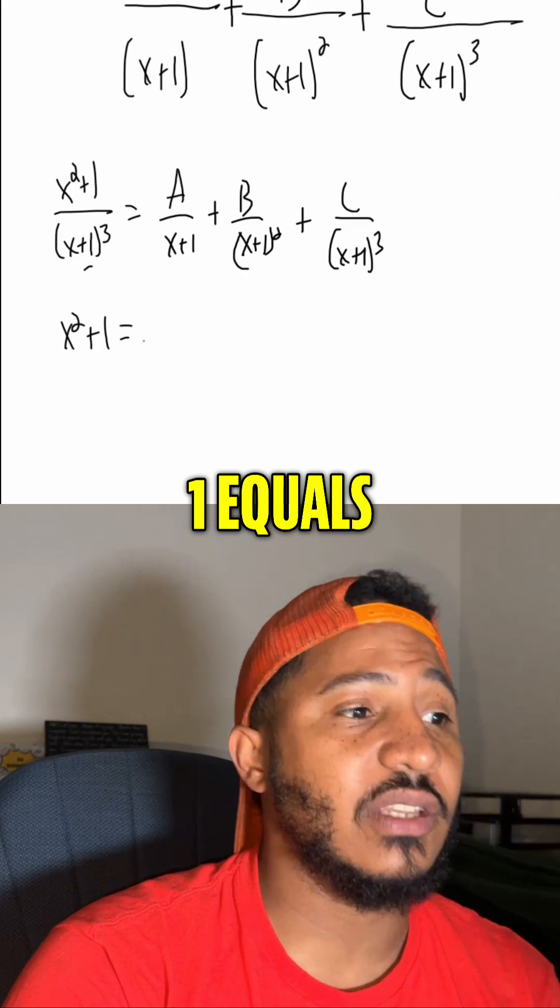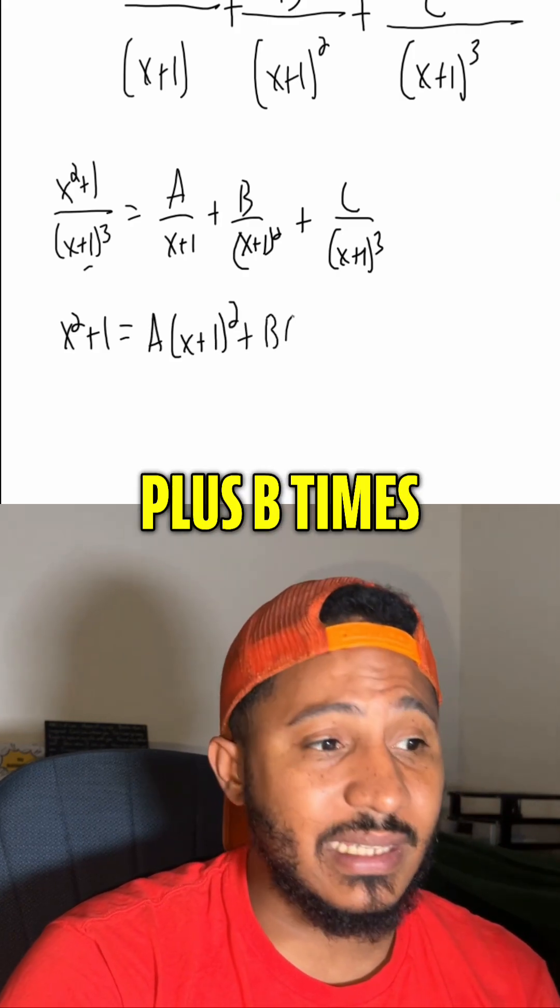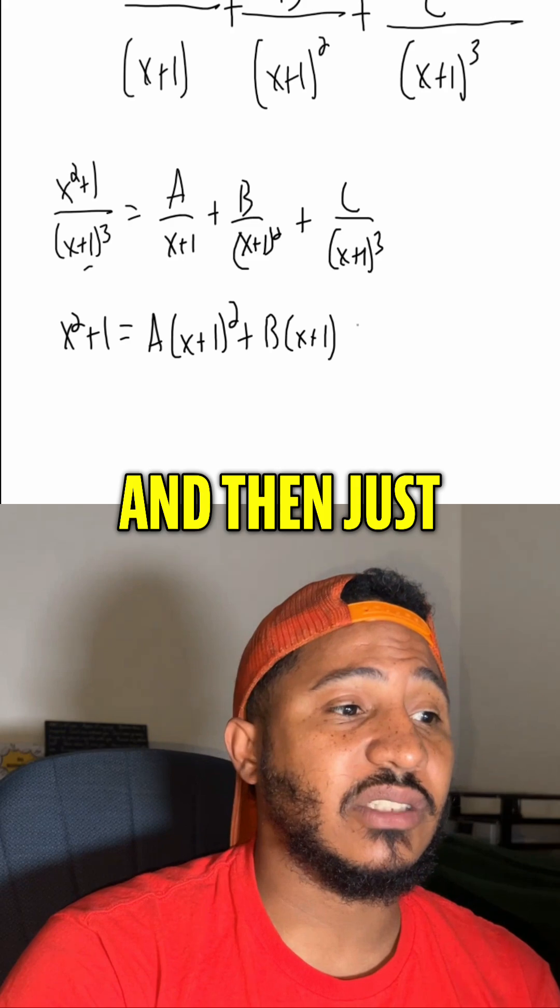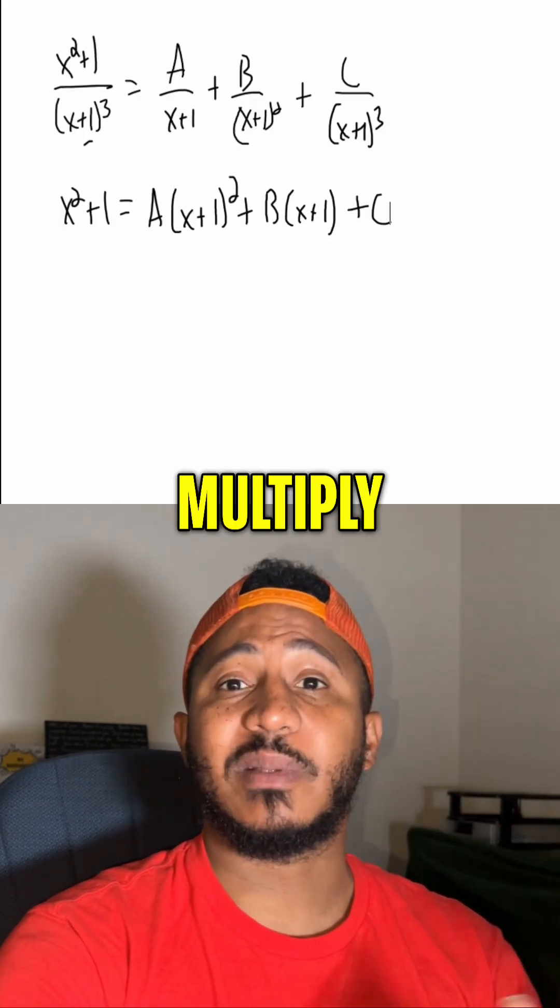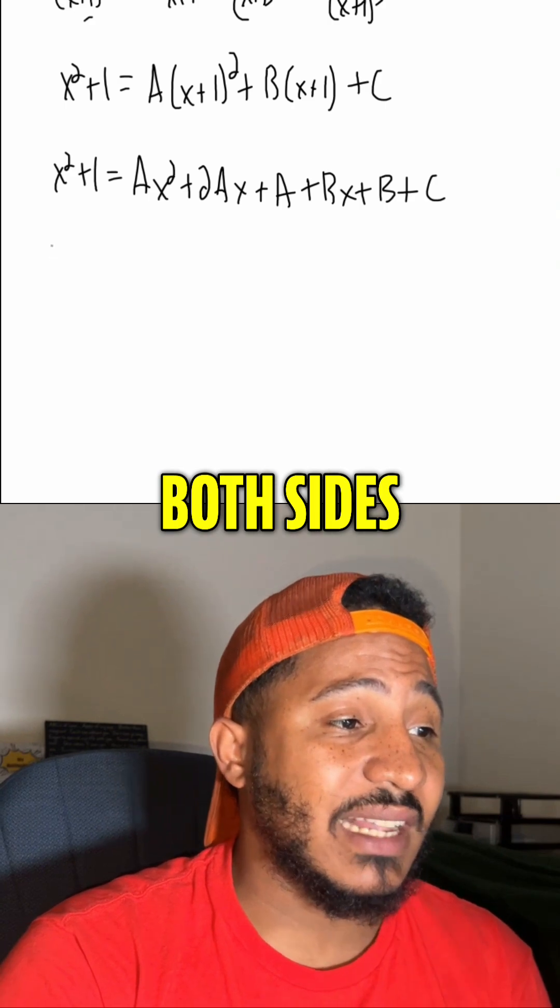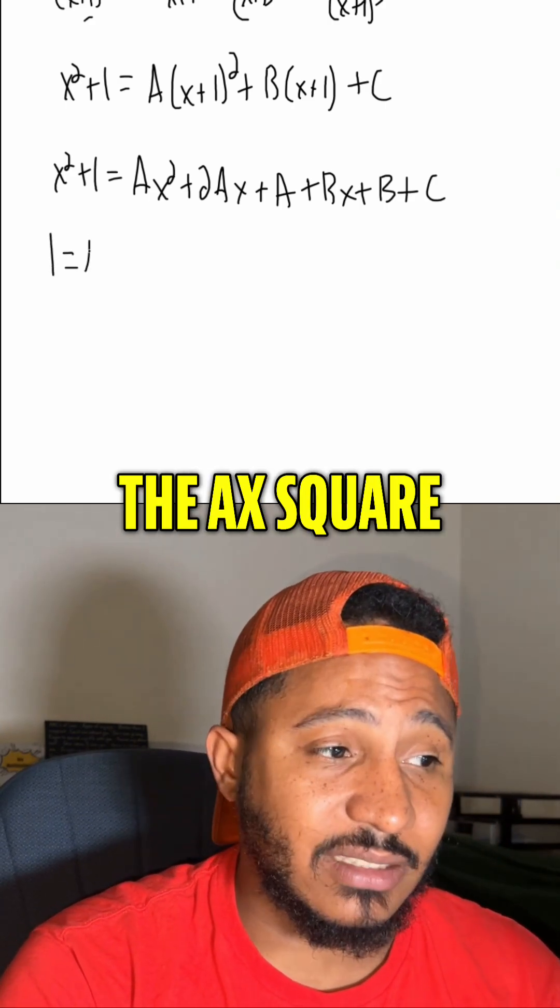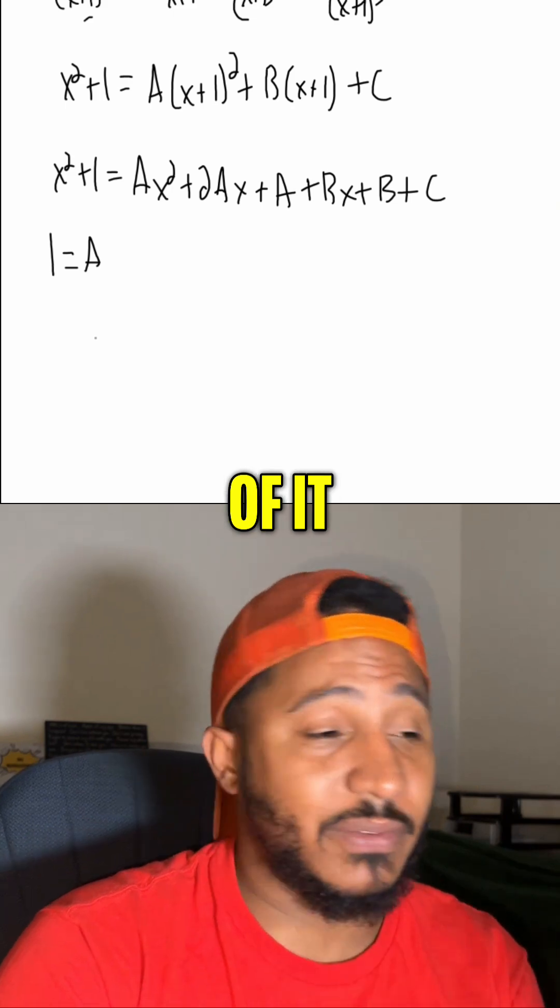This gives us x squared plus 1 equals a times x plus 1 squared plus b times x plus 1, and then just plus c by itself. Now if we multiply the side, we can equate the coefficients on both sides. So now we look at the x squareds on both sides. There's 1x squared on the left-hand side. That should equal just the ax squared on the right-hand side. So a equals 1.